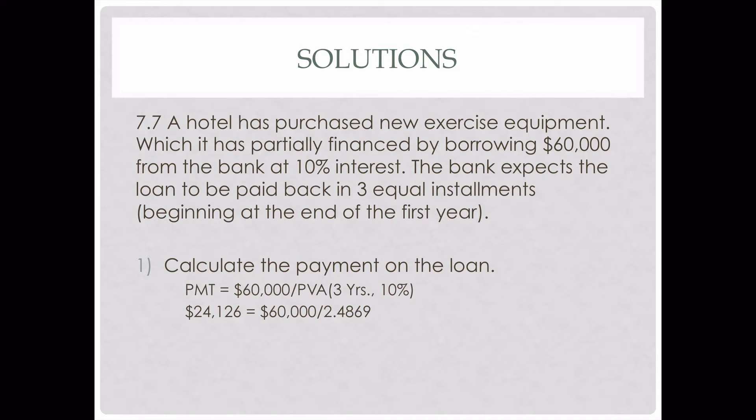The interest was 10% and it was in three equal installments, so it was for three years. We take payment equals loan amount divided by PVA, and we get $2,412.89 as the payment on the loan.